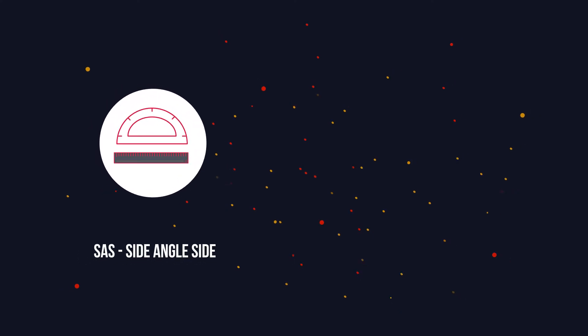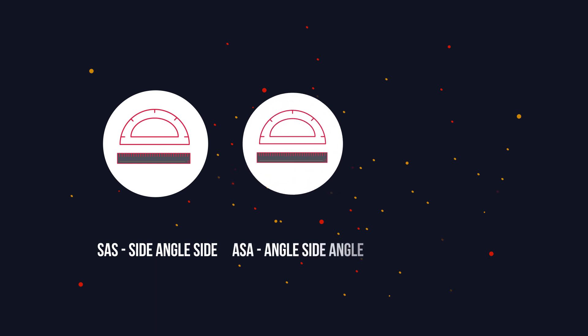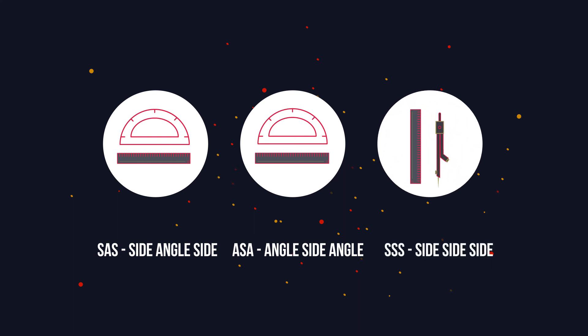So now we know how to construct triangles. We need to know three properties. If we have side, angle, side then you use a ruler and a protractor. If we have angle, side, angle we also use a ruler and a protractor. Whereas if you only know all three sides you use a ruler and a compass. Nothing too tricky to remember.